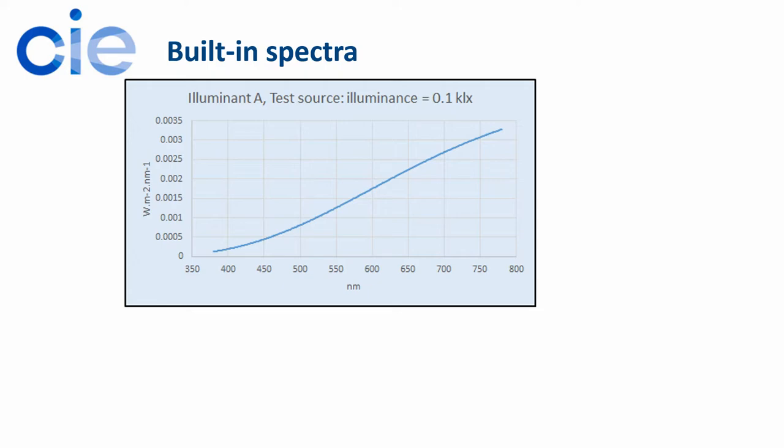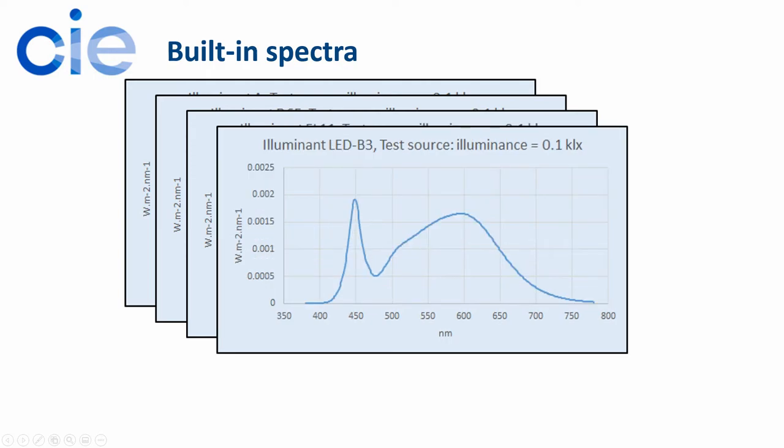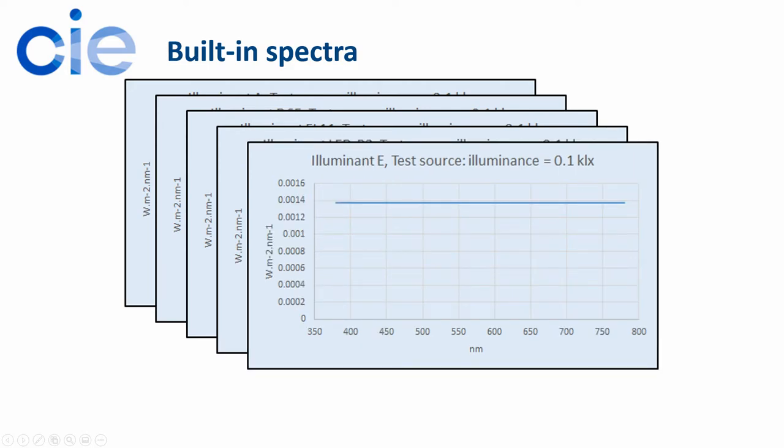We have a fluorescent light source FL11 and we have also a standard CIE LED spectrum LED B3, which is actually the one that I was using in my previous example as well, but I showed you the spectral data. And then finally we have Illuminant E, which is an equi-energy source, which means it has a uniform distribution in the radiometric system, so value constant across the whole spectrum.